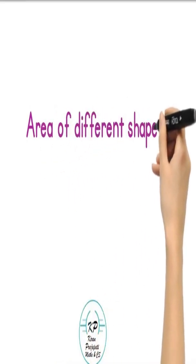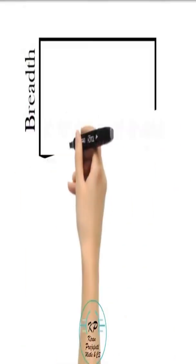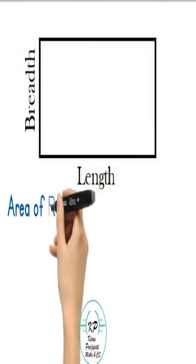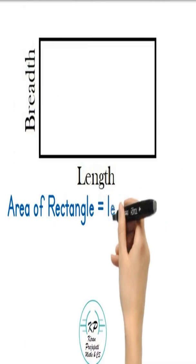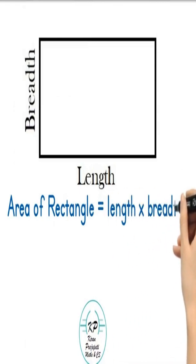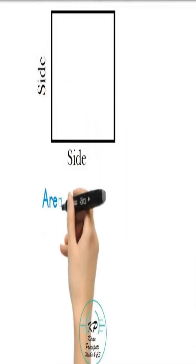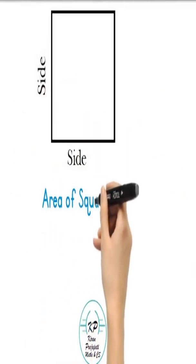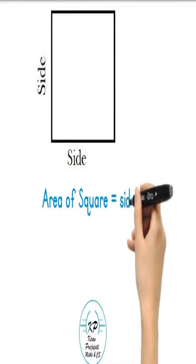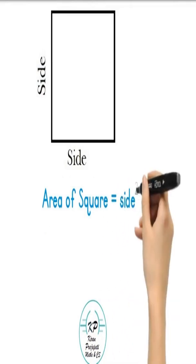Let's know the formula for area of different shapes. Area of rectangle is length into breadth. Area of square is side squared, that is side into side.